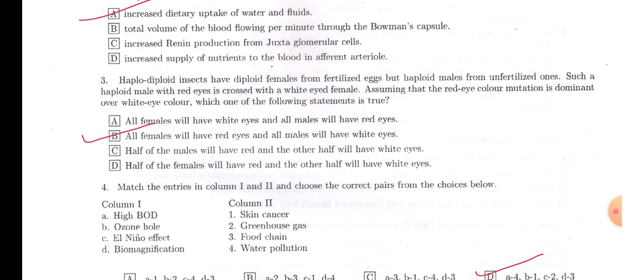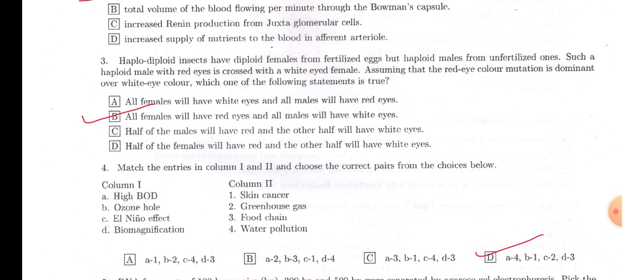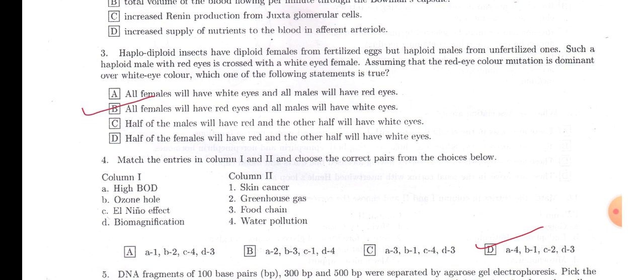In question number three, haplodiploid insects have diploid females from fertilized eggs but haploid males from unfertilized ones. Such a haploid male with red eyes is crossed with a white-eyed female, assuming that the red color mutation is dominant over white eye color. Which one of the following statements is true?